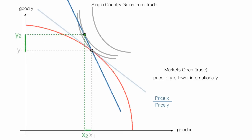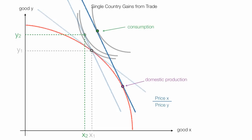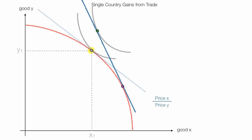At first there's a reduced consumption of good X, and the reduced consumption is X1 minus X2. Now the country begins to adjust and change production levels — it starts to produce more of good X and less of good Y. Domestic production shifts to a new level and domestic consumption shifts as well. The country is able to reach a higher indifference curve. It moves from the original point down to the purple point, producing more X and less Y.